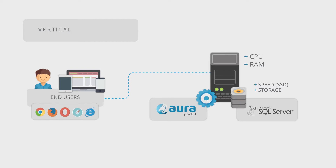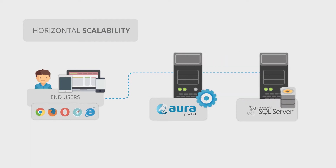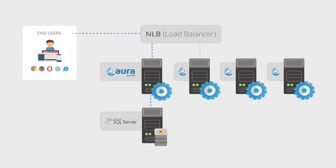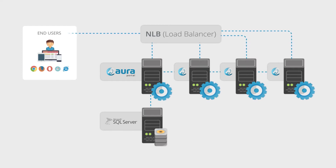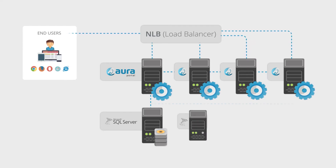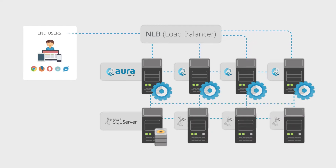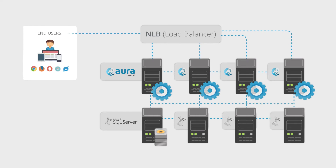Horizontal scalability: the first step of scaling that can be given with Oroportal is to divide the application server and the database server into two different servers. If this is not enough, Oroportal has a horizontal scaling system based on the addition of application servers with parallel engines using a load balancing system to distribute the work between the different nodes. It is also possible to add more database servers as a cluster. Finally, horizontal scaling can be combined with vertical scaling for each of the servers.